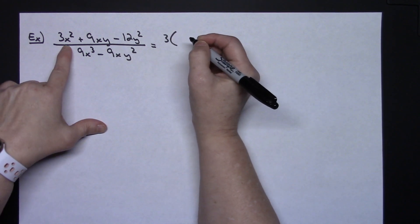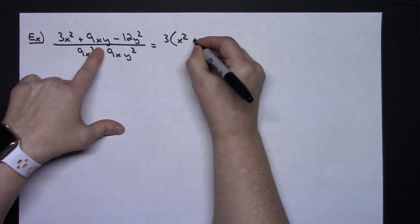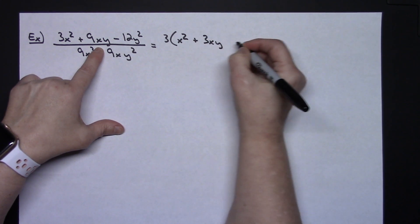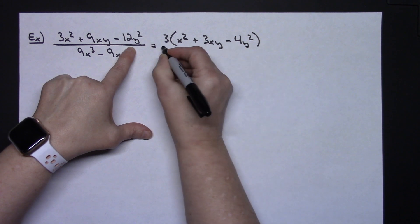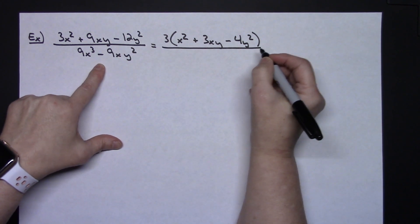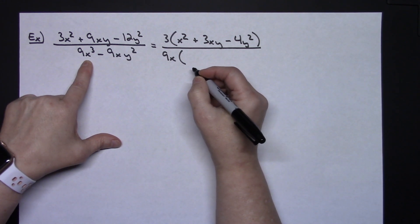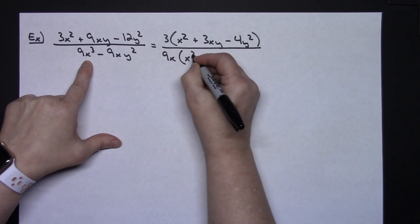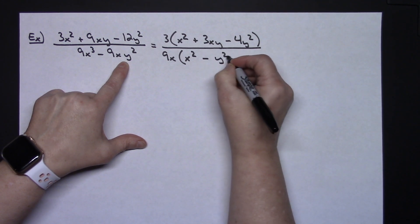When I take the 3 out on the top I will be left with an x squared and then a plus 3xy and then a minus 4y squared. Taking out the 9x on the bottom I'll have a 9x in this first term then that's going to leave me with an x squared and as a second term here minus y squared.